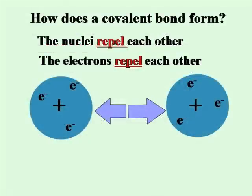So how does a covalent bond form? The nuclei with like charges that are positive would repel each other. The electrons with negative charges would repel each other. So what would be the force that draws the two atoms together?